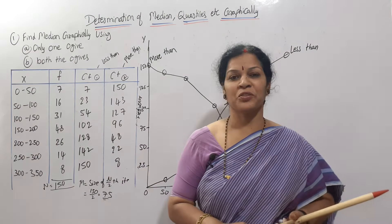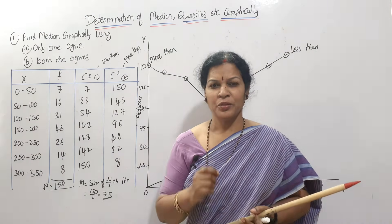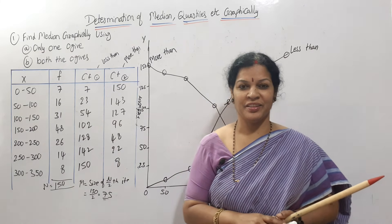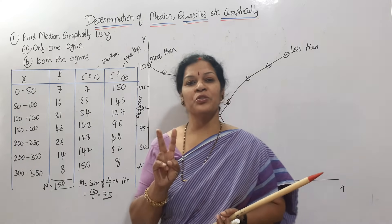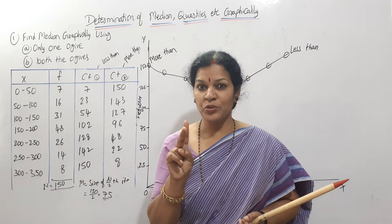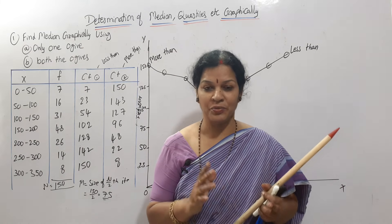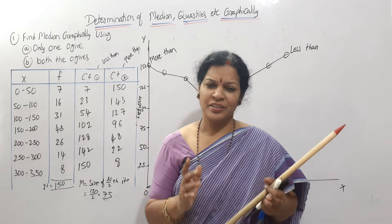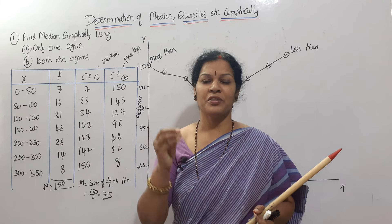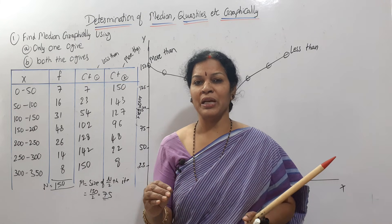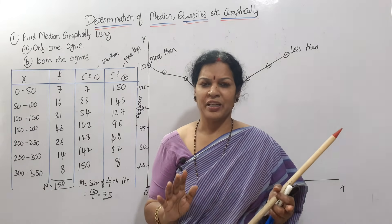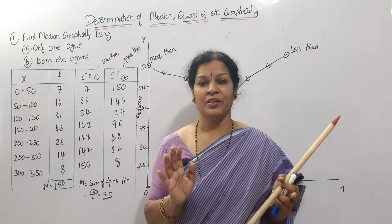Hello dear students, welcome to Devika's Commerce and Management Academy. Today we'll see how to determine median graphically. There are two ways: one ogive curve, and two ogive curves together. Using the same pattern, you can also find quartiles, deciles, and percentiles — the same data we've handled in previous classes can be found graphically.